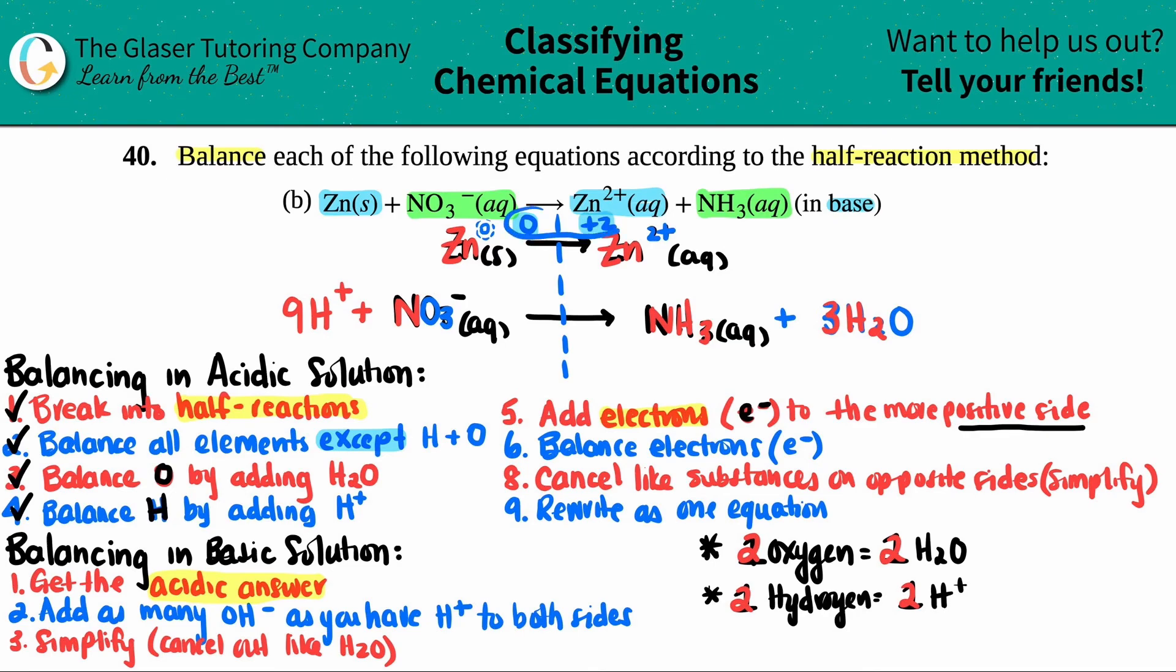These are the two charges that you're dealing with. You add the electrons to the more positive side. Out of these two numbers, which is more positive? The plus two. So I know that I have to add electrons to the right side, the product side. But how many? Well, you add as many as you need to go down to the other number. So from a two, how many numbers do I have to go or how many numbers do I have to jump to get to zero? If I think about it in terms of a number line? Two. So I need to add two electrons.